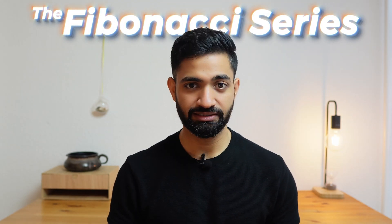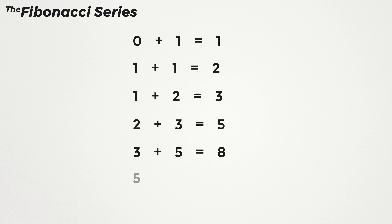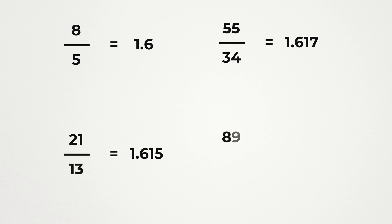To create a Golden Spiral moving outwards, we need to understand the Fibonacci series — a sequence where each number is the sum of the two preceding numbers, starting from 0 and 1. It goes: 0, 1, 1, 2, 3, 5, 8, 13, 21, and so on. What's fascinating is that as the numbers increase, the ratio between consecutive numbers approaches 1.618, the Golden Ratio. For example, 8 divided by 5 gives 1.6, and 21 divided by 13 gives approximately 1.615. As we go further, the ratio gets even closer to 1.618.